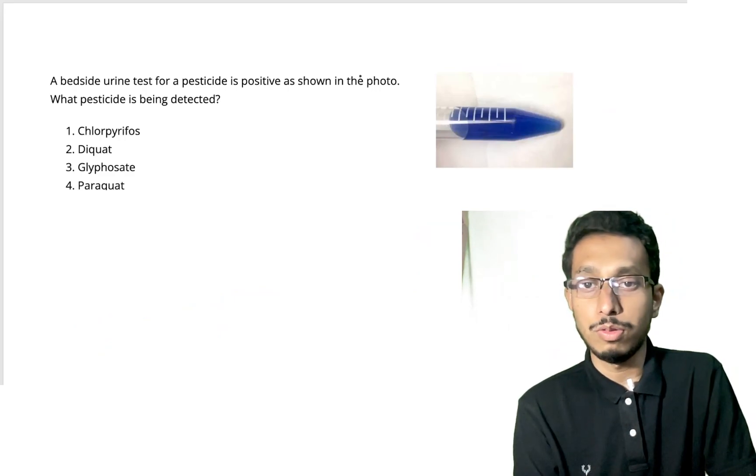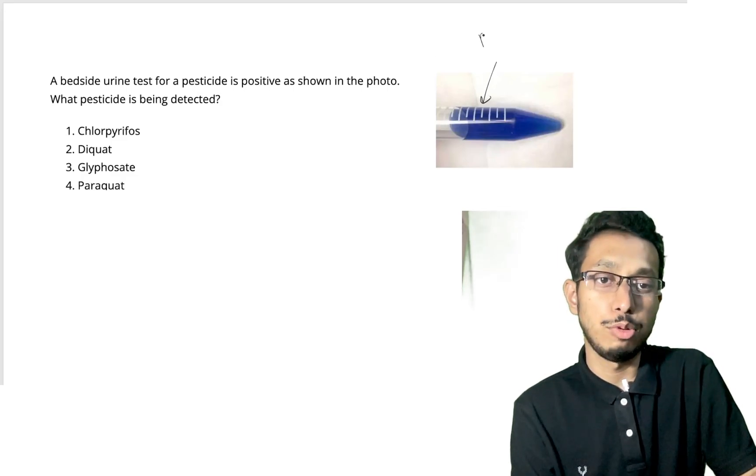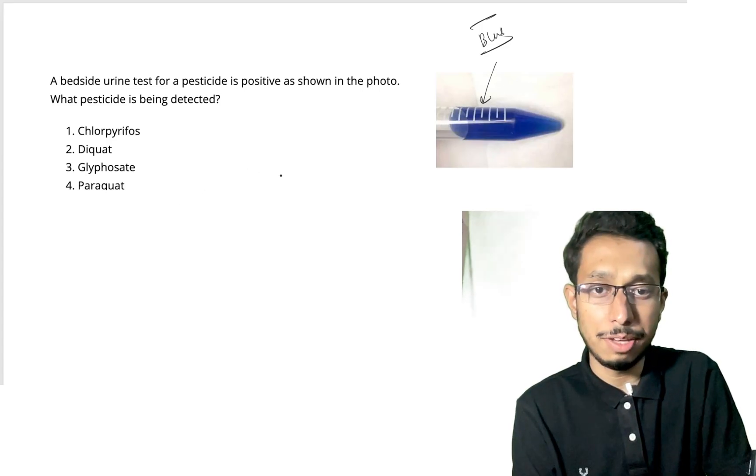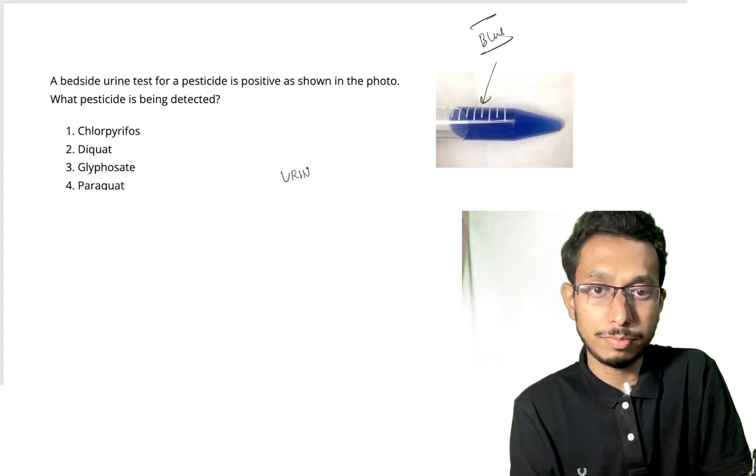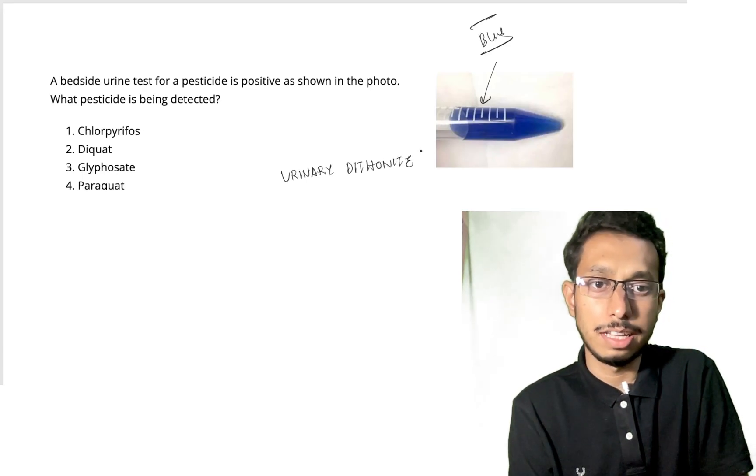Let's come to this question: bedside urine test for pesticide positive as shown in the photo. What pesticide is detected? This is a urine test where the color is turning blue. This test is known as urinary dietonite test.